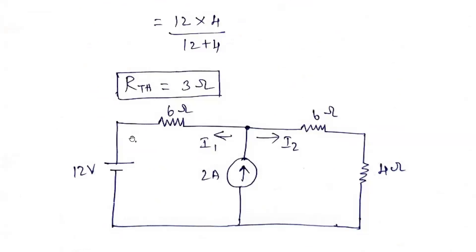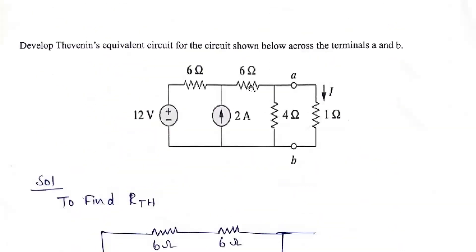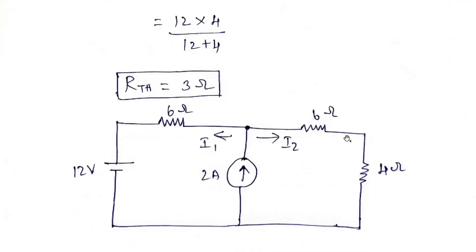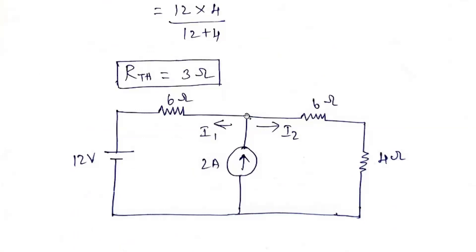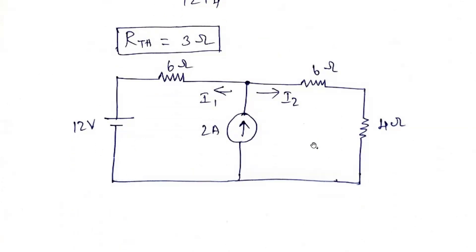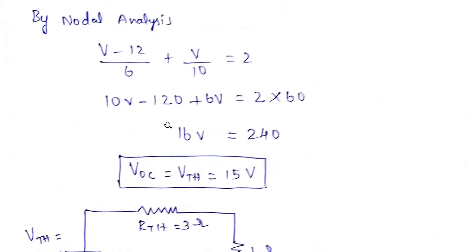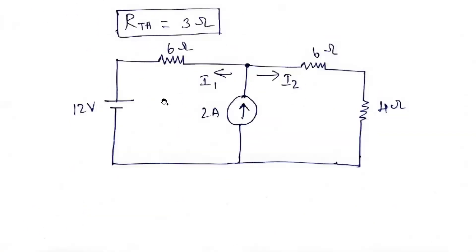Now we need to find V_th. The circuit has 12 volts, 6 ohms, a 2 ampere current source, and 6 ohms and 4 ohms. Applying nodal analysis: the current is traveling in this direction. We take loop current i1 and loop current i2.